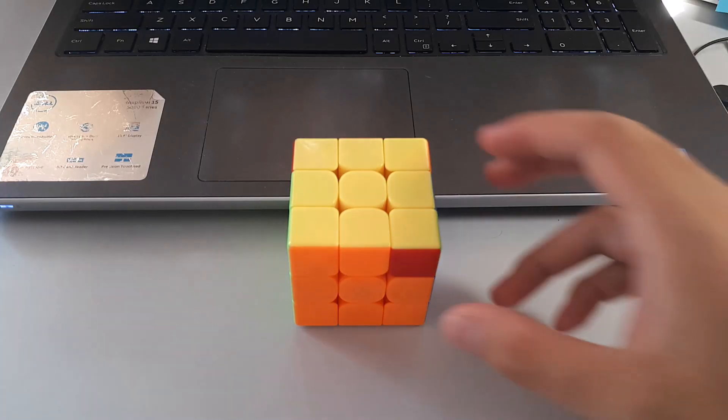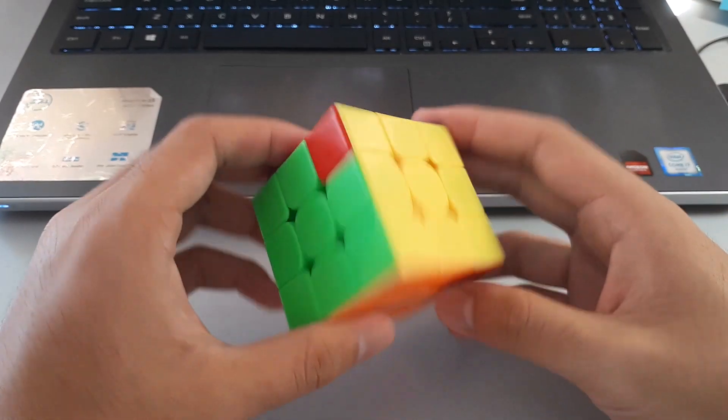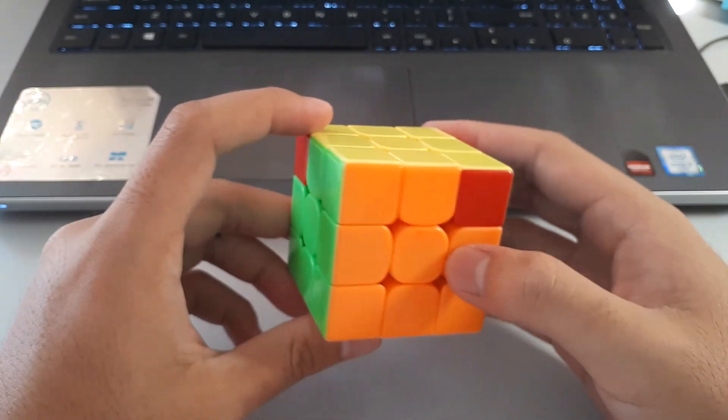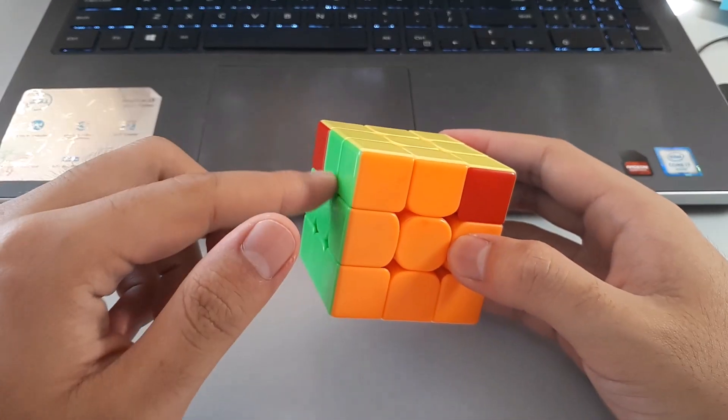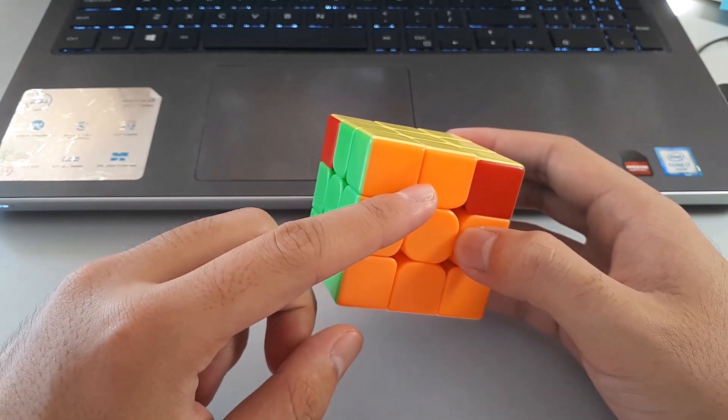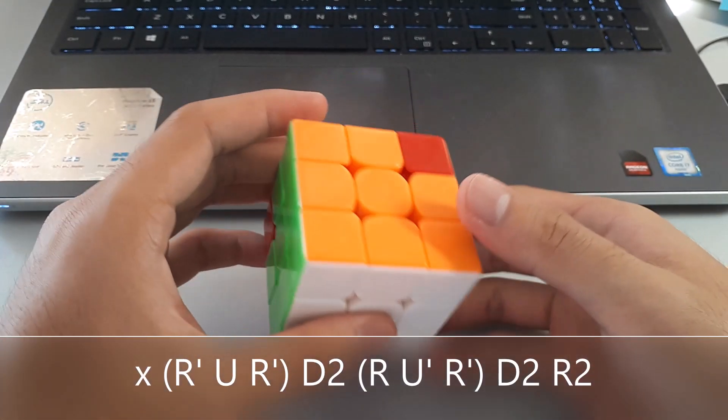In terms of algorithms, there are a few quite popular ones. The main one that a lot of people use would be this one, where you hold the 2x2 block at the front left and rotate down to do this algorithm.